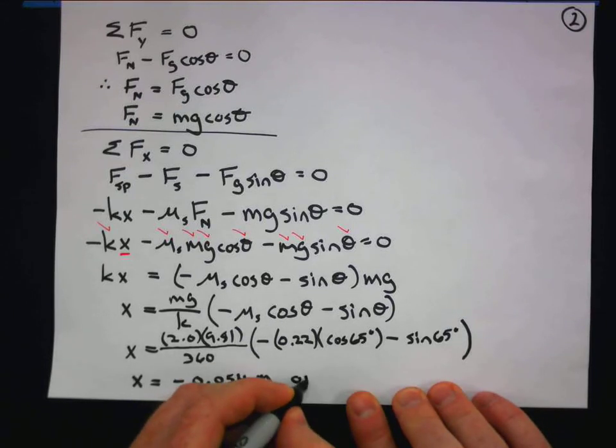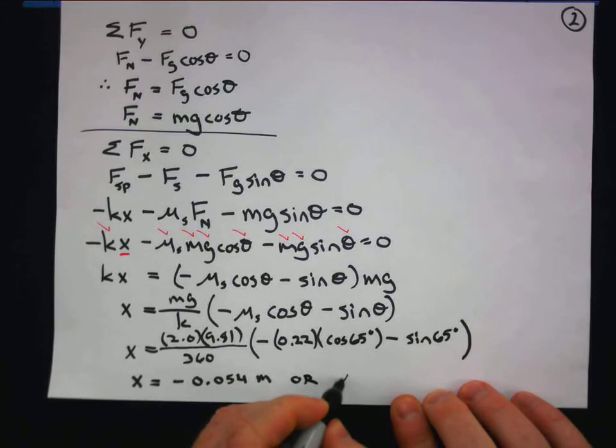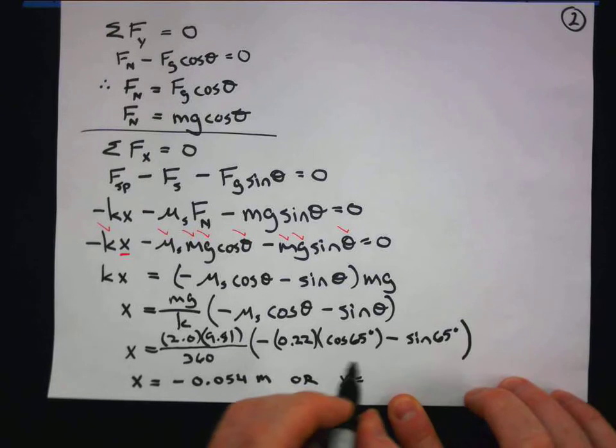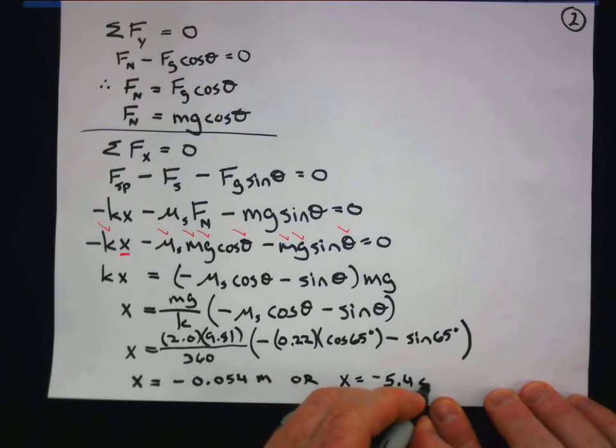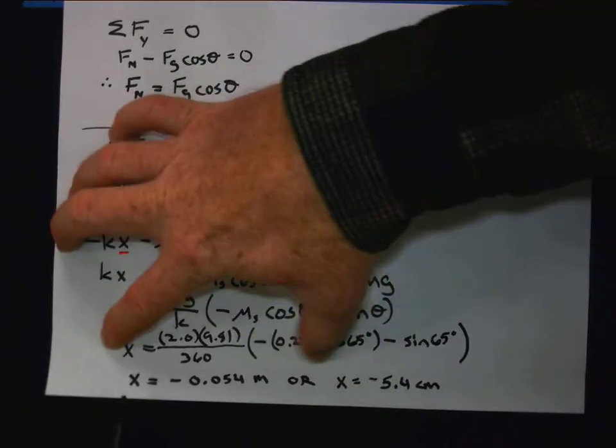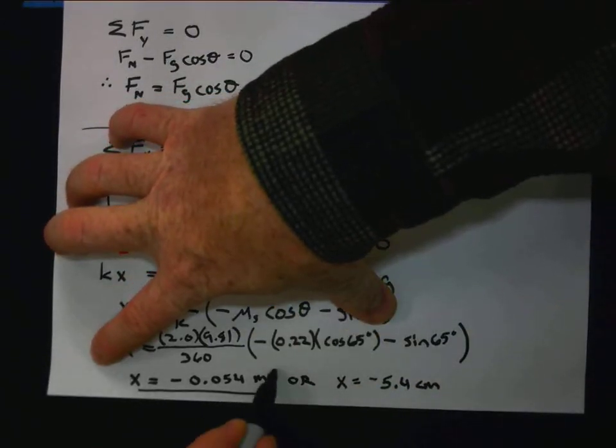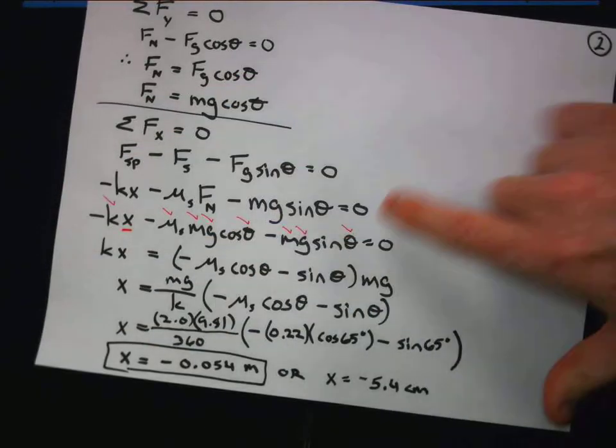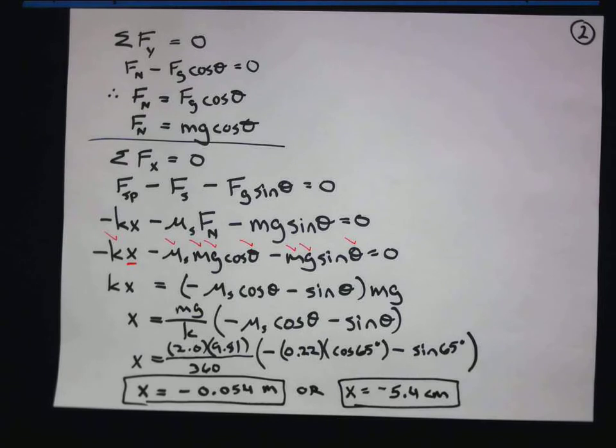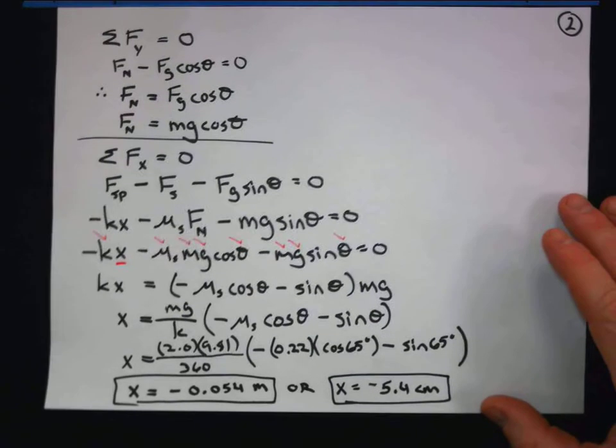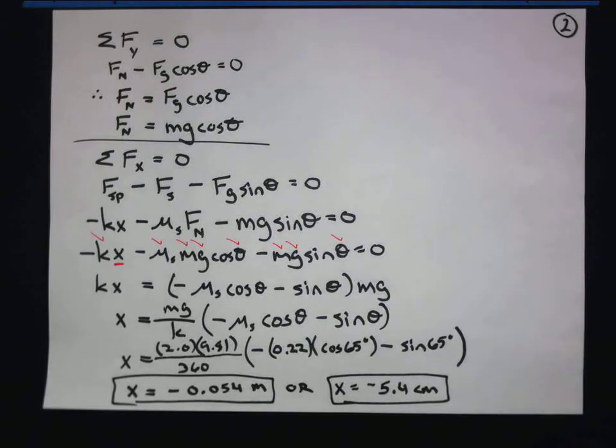Now this could also be represented in centimeters, negative 5.4 centimeters. Either way, I'm going to do the whole box around my answer thing because that's just nice to see. Especially when you're the teacher. Looks good. Also helps if you're a test reader. Hint, hint. And you just want to assign that extra point to people who get the answer right. There you go.